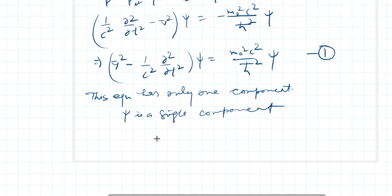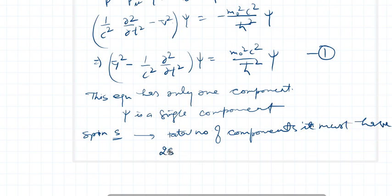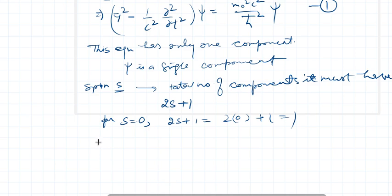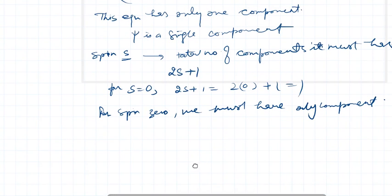Also, if we recall the spin, and if there is a spin s, then the total number of components it must have is 2s+1. Now for s=0, 2s+1 comes out to be 2×0+1, so it is always 1. That means for spin-0 we must have only one component.